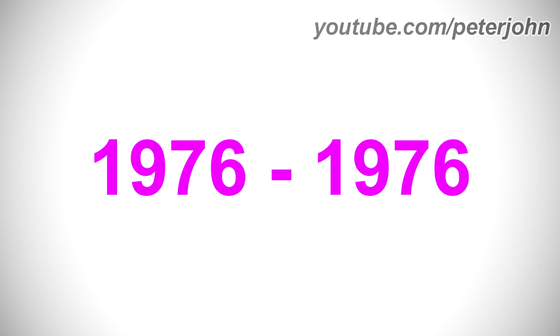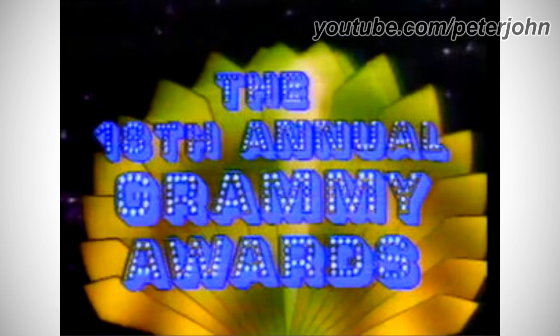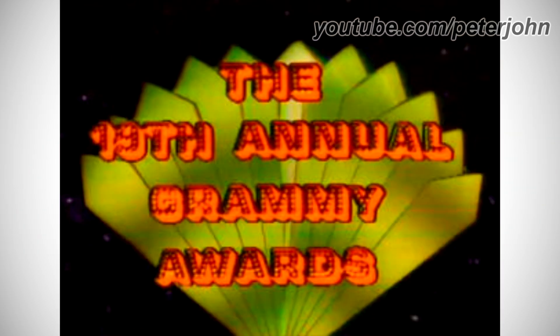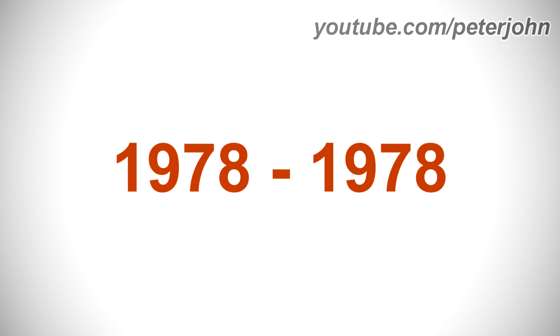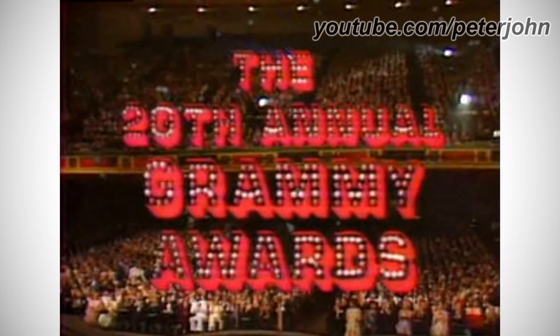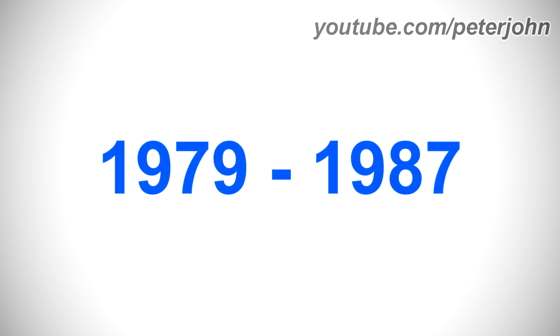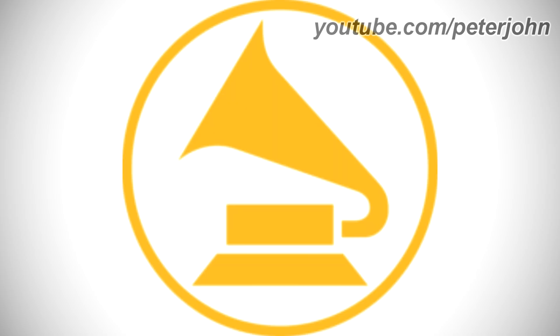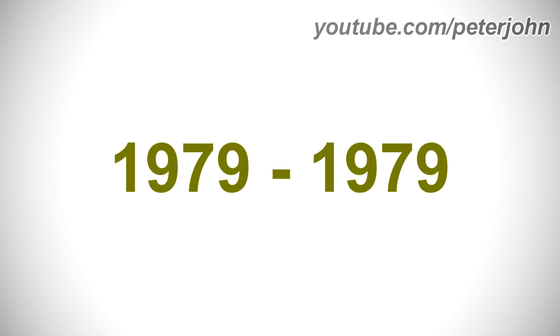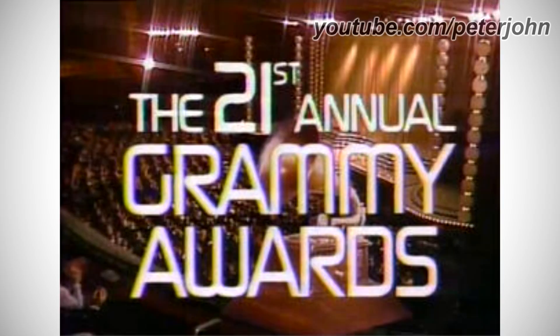1976 to 1976: the text is now in blue text on a blue outline. 1977 to 1977: what was blue is now red. 1978 to 1978: the logo is brighter. 1979 to 1987: there is a Grammy Award inside a yellow ring.